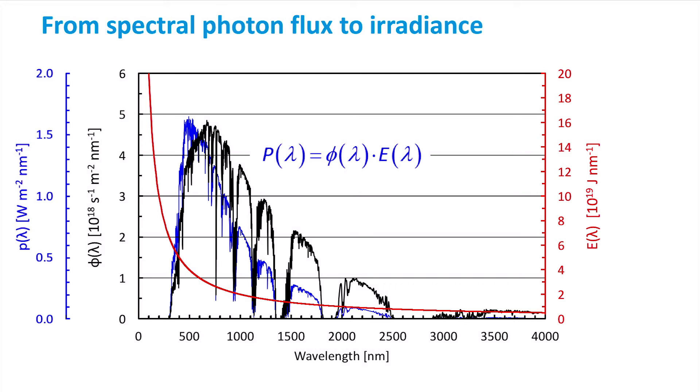We can obtain the irradiance from the spectral power density by integrating over the full wavelength range. The irradiance integrated from 300 nanometers to the wavelength indicated on the horizontal axis is depicted by the green line.